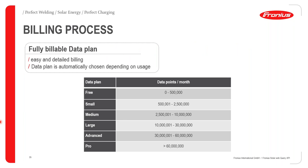Importantly, the SolarWeb Query API uses a billing model. Between zero and 500,000 data points per month is free. From 500,000 to 2.5 million data points per month, a charge applies, increasing with higher data volumes. Contact a technical sales advisor for specific pricing per platform tier.